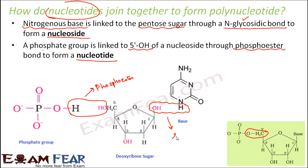So what is this bond? This bond is the phosphoester bond. And the other bond — between the sugar and the base — was the glycosidic bond. So this entire structure which is formed — sugar plus base plus phosphate — is a nucleotide. This is just one nucleotide.